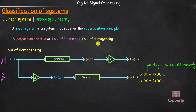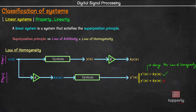If a system follows both the law of additivity and the law of homogeneity, then the system is said to satisfy the superposition principle and the system is therefore linear. Now, to show that a system is non-linear, all you have to show is that it fails at least one of these laws. That is, if a system does not follow the law of homogeneity, there is no need to check the law of additivity because the system is going to be non-linear as it has already violated the superposition principle.